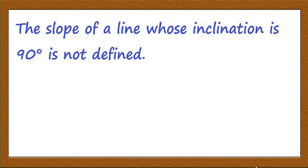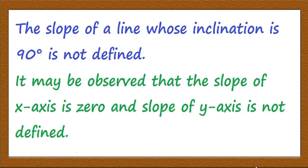The slope of a line whose inclination is 90° is not defined because tan 90° is not defined; therefore the slope of a vertical line is not defined. The slope of the x-axis is 0 because the angle of inclination of the x-axis with the x-axis is 0°. The slope of all lines parallel to the x-axis is also 0. The slope of the y-axis is not defined. With this I will conclude this session, and in the next session we will study some other important results on the straight line. Thank you.